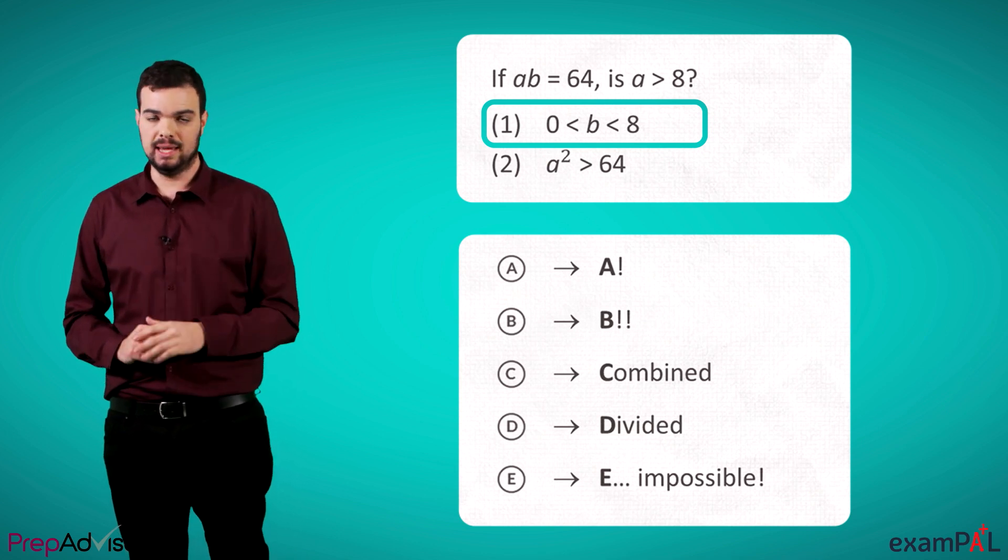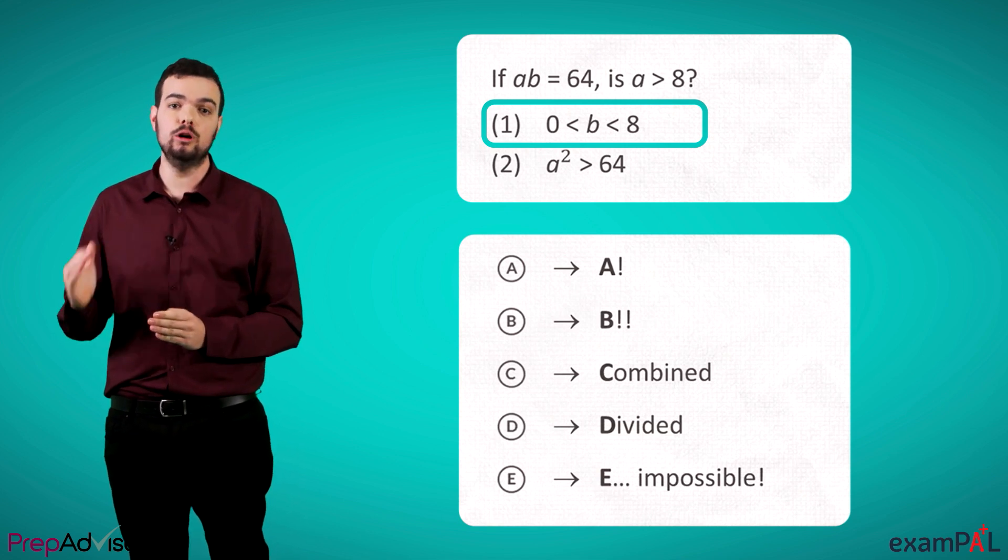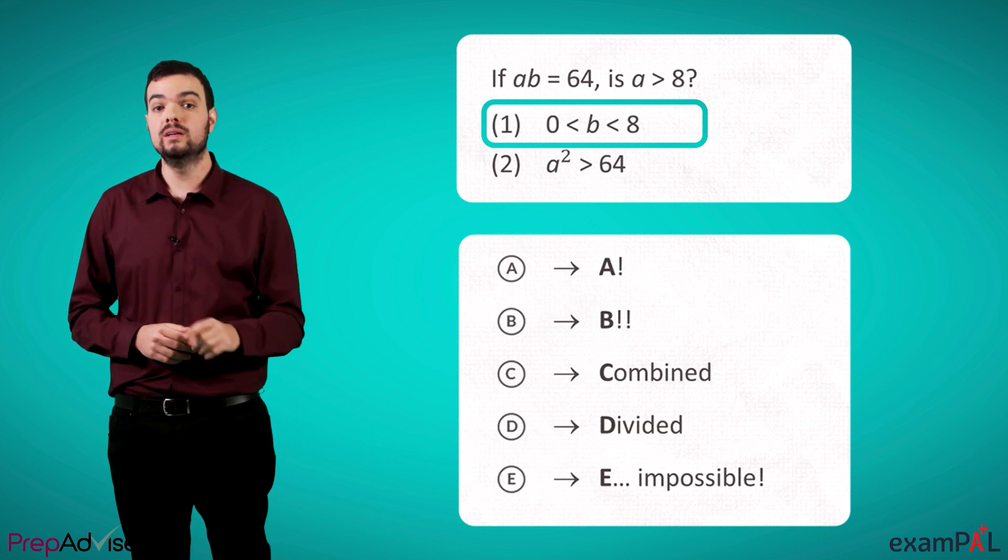But b is less than 8, which means, logically, that a has to be larger. And that's our solution. So statement 1 is sufficient.